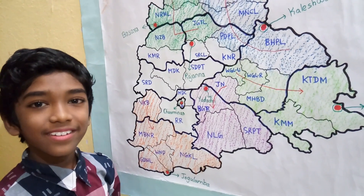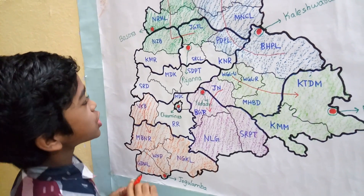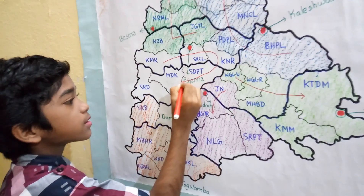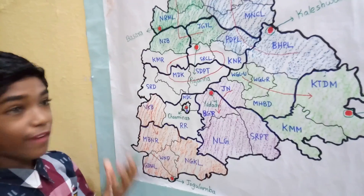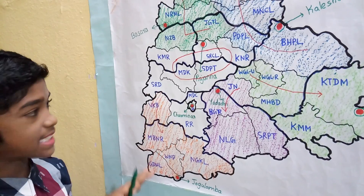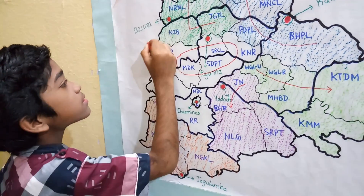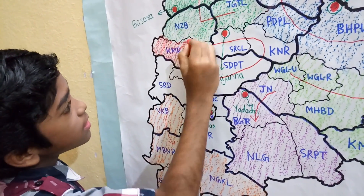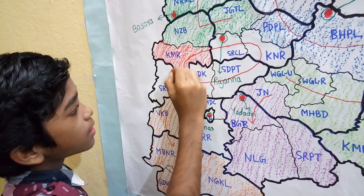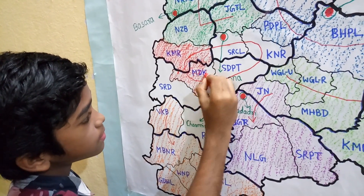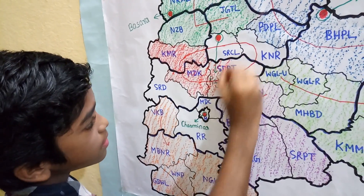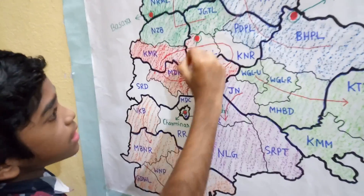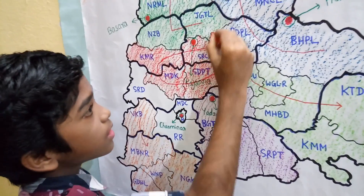Which shape do you like more? I like the oval shape. So, I draw an oval shape here. This shape covers 5 districts, and those 5 districts come under Rajana zone. It has 5 districts: Kamareddy, Medak, Siddipet, Rajanna Sircilla, and Karimnagar.